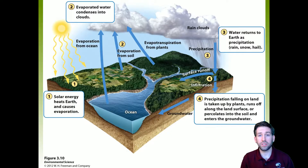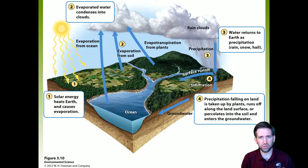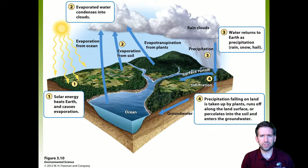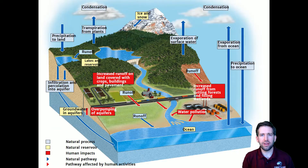Infiltration also eventually makes its way to the ocean. The groundwater is moving underneath, but instead of a fast or lazy river, groundwater moves very, very slowly — it can take many, many years before it finally reaches that body of water, just like surface runoff does.